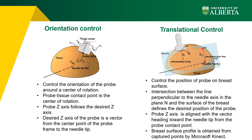In the translational control scenario, the probe follows the needle tip by moving over the breast surface while the probe z-axis is aligned to intersect the vector heading toward the needle tip from the probe contact point. To determine the desired trajectory over the breast surface for the contact point of the probe, the intersection between a plane—defined as containing the longitudinal axis of the needle and the probe contact point—and the breast surface must be defined. For real-time control, instead of finding the full trajectory line, the desired location of the probe corresponding to the current needle tip location is found iteratively. As shown in the right-hand figure, the desired tissue-probe contact location can be obtained by finding the intersection between the line perpendicular to the needle axis in plane N (denoted LN) and the surface of the breast. To determine the breast surface profile, points on the surface can be captured by any 3D scanner such as Microsoft Kinect, and the breast surface model can be defined by fitting parameters to the captured points.